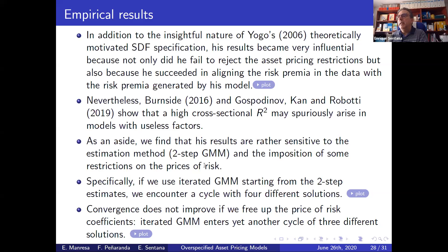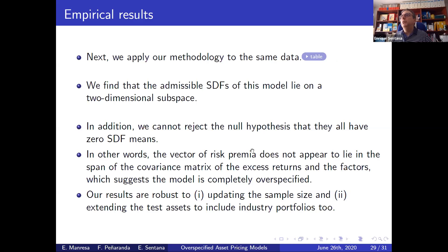One thing we also find is that if instead of doing two-step GMM you do iterated GMM, the solution that Yogo found encounters a cycle — a possibility one always reads might happen with iterated estimators, but one I have never come across in a practical example before. What I really want to show is the results table summarizing the empirical findings.